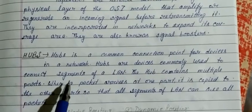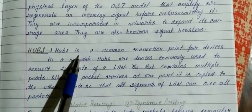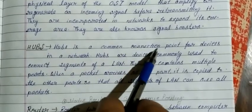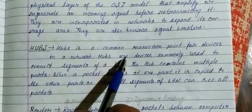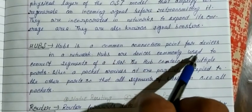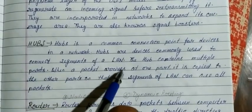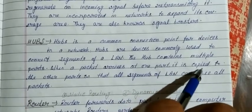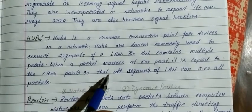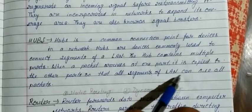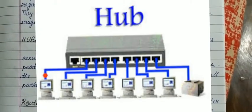Third component is Hub. Hub is a common connection point for devices in a network. Hubs are devices commonly used to connect multiple ports. When a packet arrives at one port, it is copied to all other ports so that all segments of the LAN can see all packets. Hub is a common connection point for devices.